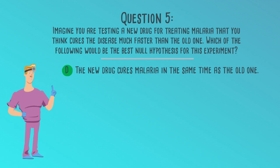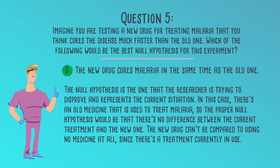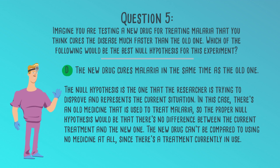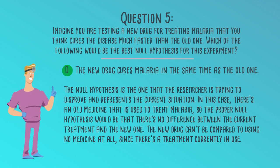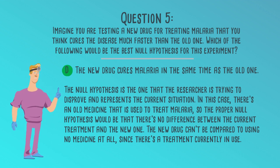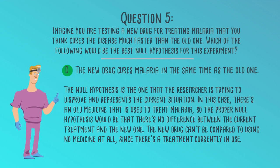The correct answer is D. The new drug cures malaria in the same time as the old one. The null hypothesis is the one that the researcher is trying to disprove and represents the current situation. In this case, there's an old medicine used to treat malaria, so the proper null hypothesis would be that there's no difference between the current treatment and the new one. The new drug can't be compared to using no medicine at all, since there's a treatment currently in use.